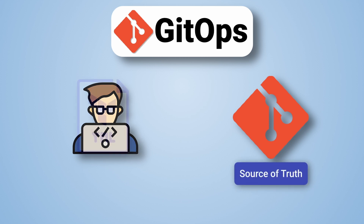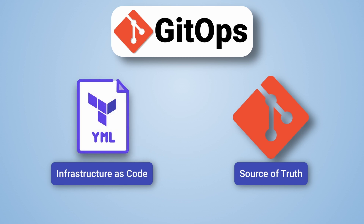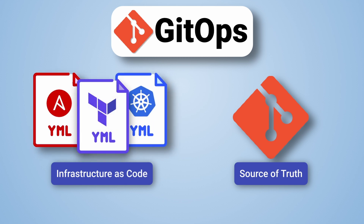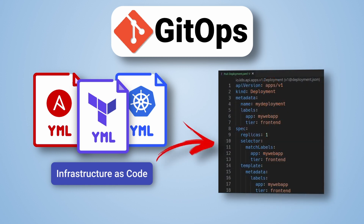Infrastructure as code is a way of defining your infrastructure in a file rather than manually clicking through a GUI. Tools like Terraform, Ansible, and orchestrators like Kubernetes all take on this concept where you define components and resources of your infrastructure in YAML files.